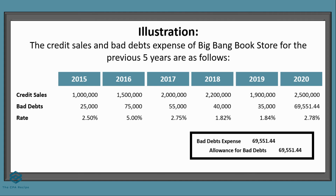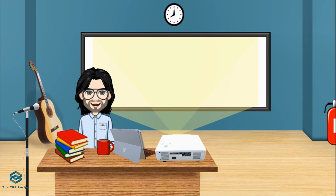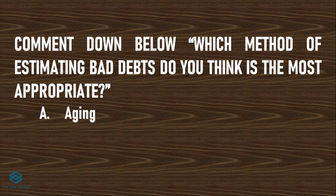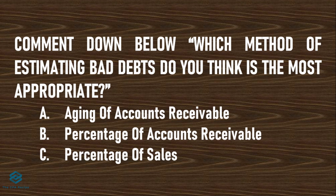Just to highlight: since the rate is based on bad debts in relation to the sales figure, the amount computed is already the bad debts expense — regardless of any outstanding balance in the allowance for bad debts. This is because we estimated bad debts expense as 2.78% of current year sales, not the allowance balance, as opposed to the previous two estimation methods. Now that you know the methods to estimate bad debts expense, comment down below which you think is the best method and why.